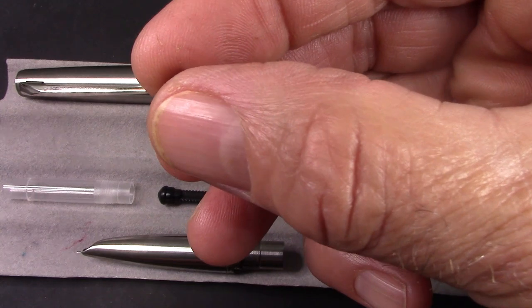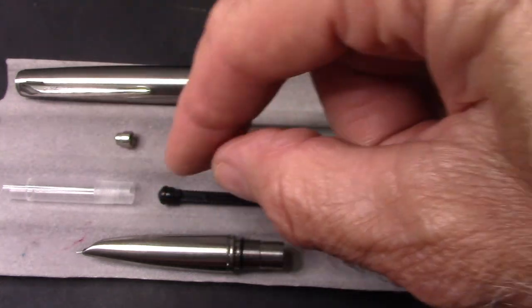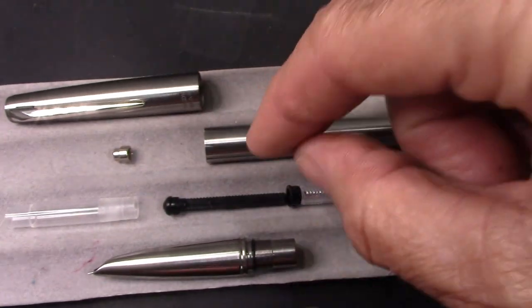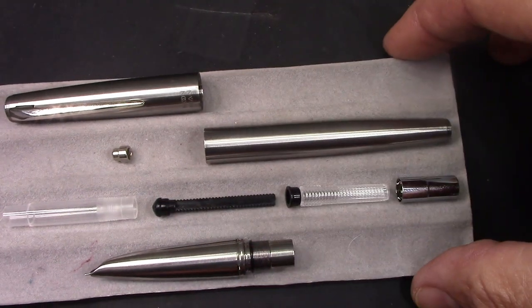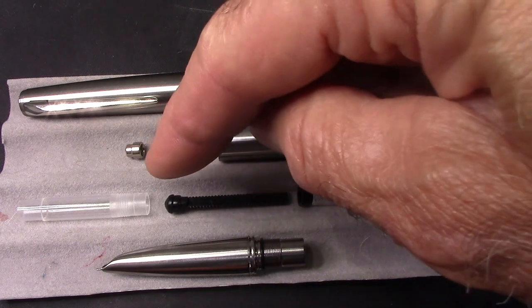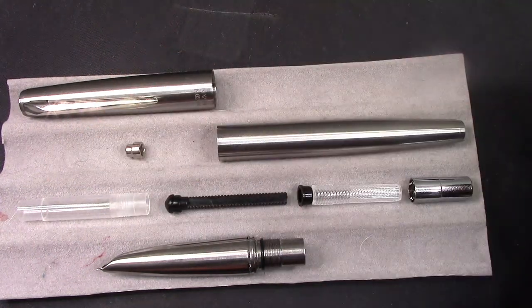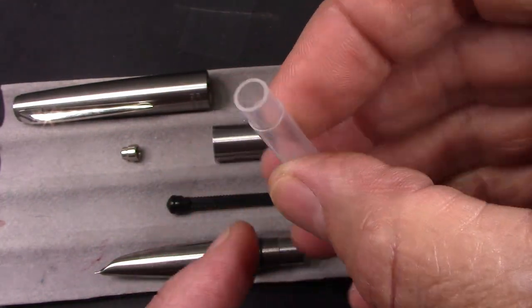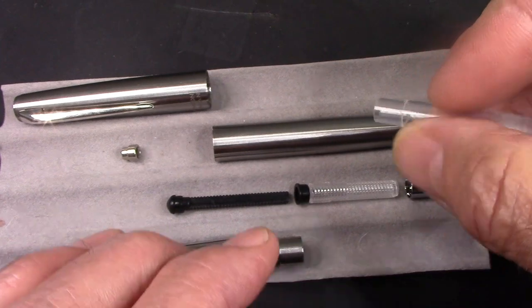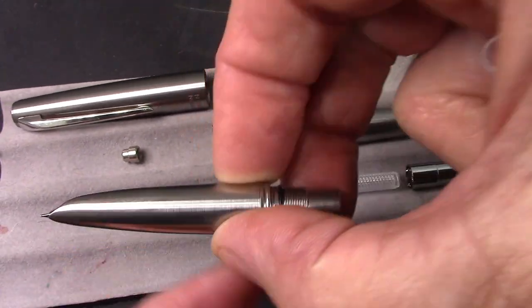We'll find a suitable ink and see how that nib writes. So this is as far as I'm going to disassemble the pen. I did take the converter apart because it had this insert in the converter - it's not a spring, it's just a lump of metal. I don't think it serves any purpose. I have not found any of these devices to really keep the ink flow towards the nib.